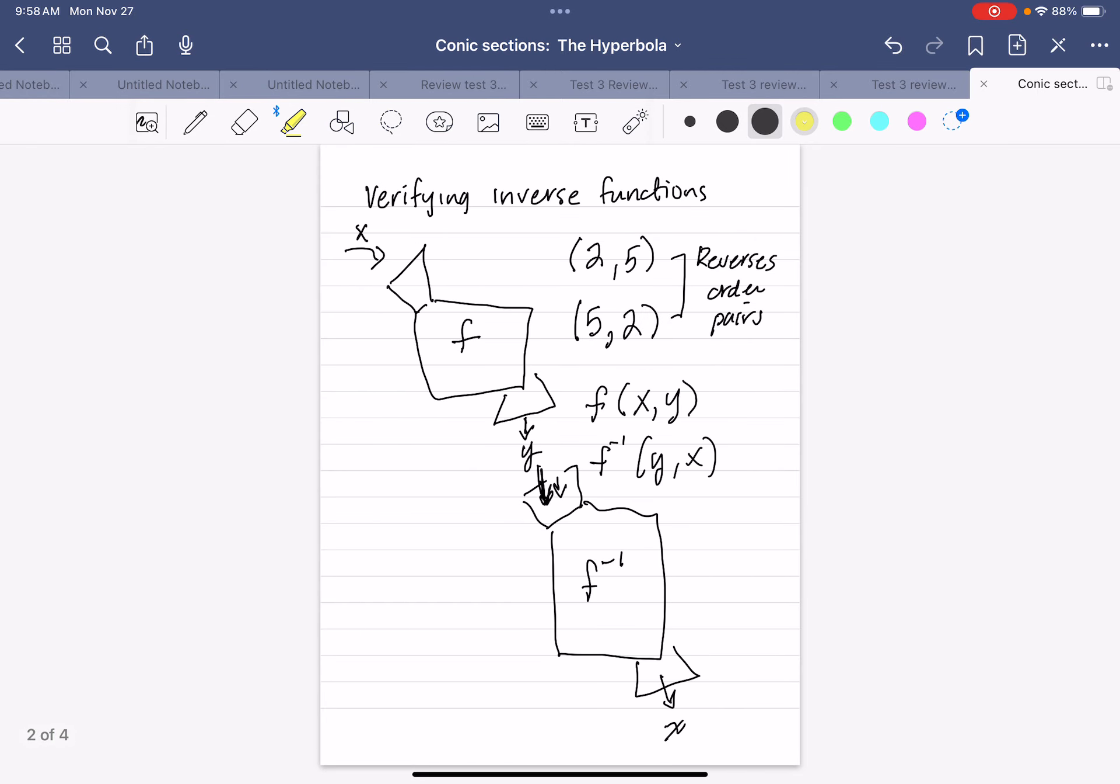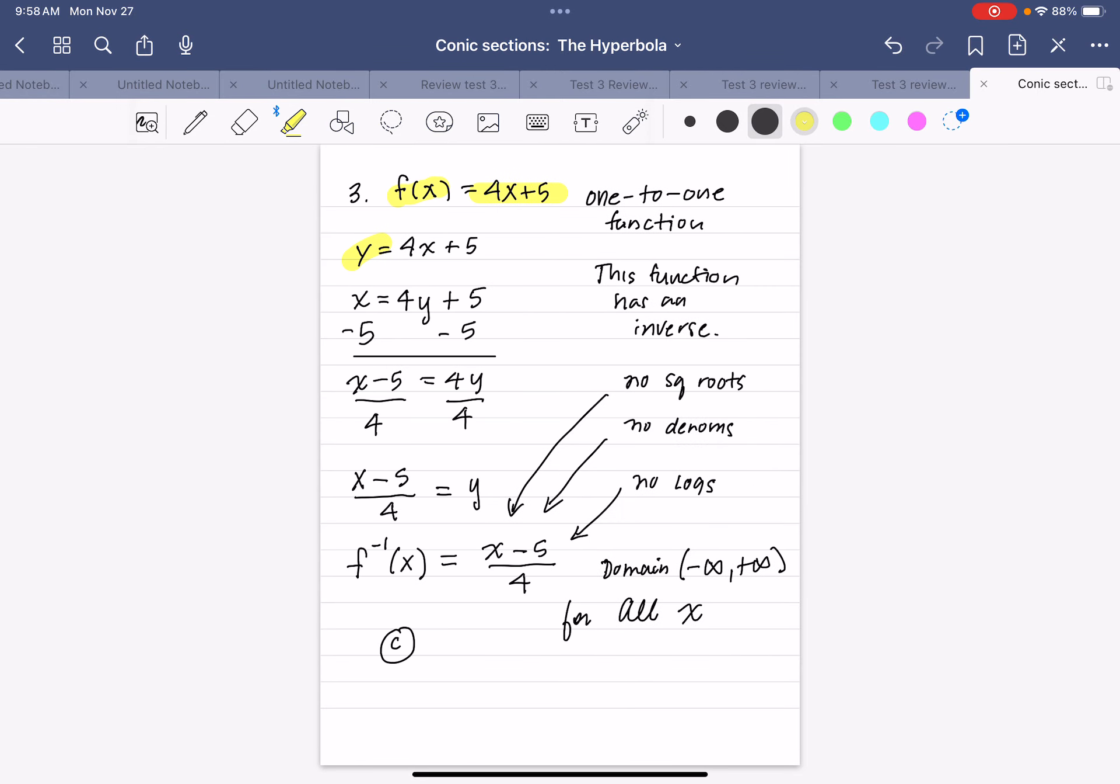So a little quick review. The first thing you do is you replace this f(x) with the letter y. Then you reverse your x and your y. So it was y = 4x, now it's x = 4y. Then we solve for y. So we work this all the way down until we get y by itself, and this is our inverse. So that's why we wrote it as f inverse.